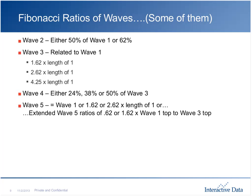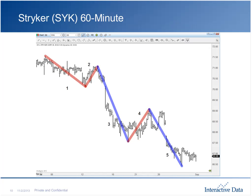Let's put it in practical terms. This is a 60-minute chart of Stryker — SYK. There is that same five-wave pattern: wave one down, wave two as a buying wave, a very strong powerful wave three, wave four as a secondary correction, and wave five as the final move of the sequence. It's all being put together with Fibonacci ratios. Let's start from the left and work our way right to see how these waves come together.